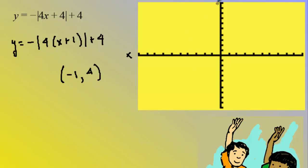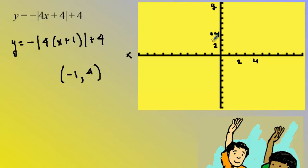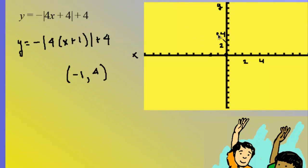I'll go ahead and graph this. I'm putting my markings on the axis. The vertex is at negative one, positive four — that's the horizontal and vertical translation. It's a reflection over x which means it's going to open upside down. The slope is four so I'm going to go down four and over one to give me one ray, and down four and over one the other way.